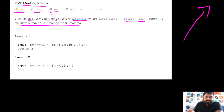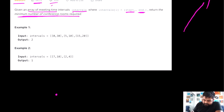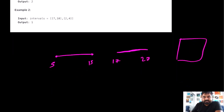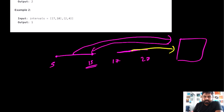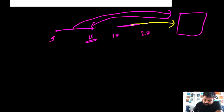For any single meeting, we need at least one conference room, and when that meeting ends, the room can be reused. For example, if we have a meeting that starts at 5 and ends at 15 minutes, and another that starts at 17 and ends at 27 minutes, we only need one conference room. The first meeting ends at 15, everyone leaves, and the new people attend in the same room.